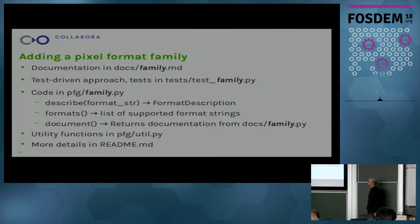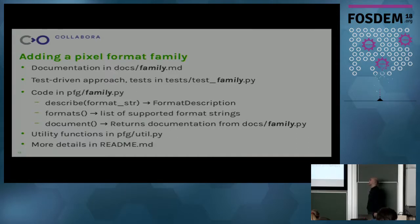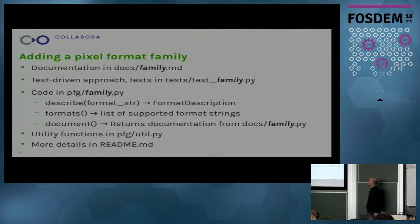The family.py module in PFG should provide three functions. First, describe-format-string, which returns a format description — a Python class with all the information about the particular pixel format. You also need to implement the formats function, which returns a list of all the format strings that this family supports. And finally, the document operation that returns the documentation from docs/family.md.